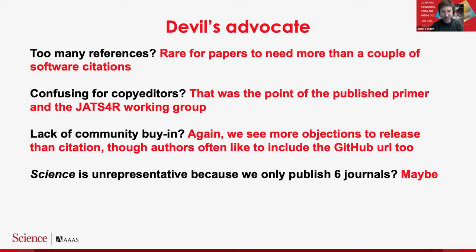Lack of community buy-in — I have never really had an author say they just don't want to cite software. Once we suggest it, they say sure. There are indeed authors who like to include their GitHub URL directly, and even when we tell them there's another landing page, they say they want someone to click straight from the paper into GitHub. In those cases we say: you can put that URL in, but also include the citation. GitHub is doing a very good job of messaging and integrating these ideas; GitLab less so.